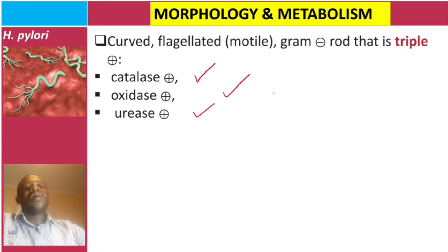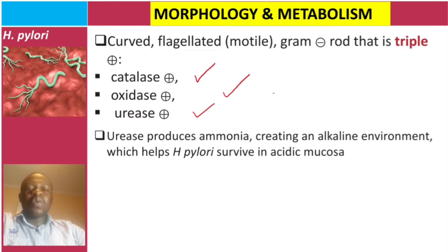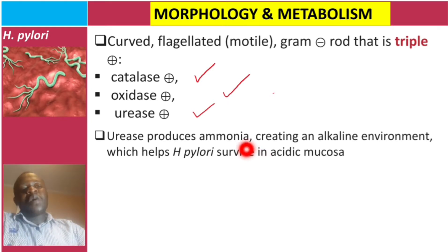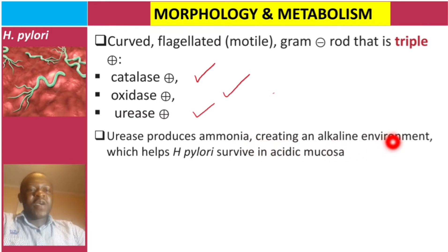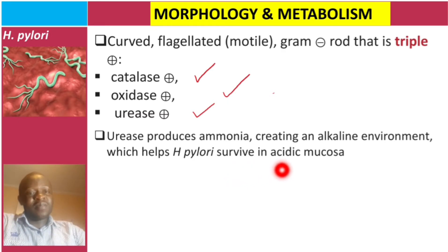What is the function of urease? This bacteria produces urease, which cleaves urea to form ammonia. Ammonia is alkaline, so this creates an alkaline environment which helps H. pylori survive in the acidic mucosa of the stomach.